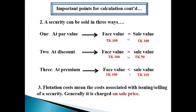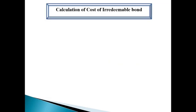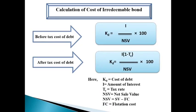Flotation cost is one of the most important topics. Flotation cost means the cost associated with the selling of a security. That means, all types of costs related with the selling of a security will be termed as flotation cost. Generally, this cost is charged on the sale price. Now, we will learn how to calculate the cost of irredeemable bond. When there is no tax rate, we use the basic formula. If there is a tax rate, we adjust it: the formula is I × (1 − TC) ÷ NSB × 100. Here, I stands for amount of interest, TC stands for tax rate, and NSB stands for net sale value, calculated by deducting flotation cost from sale value.